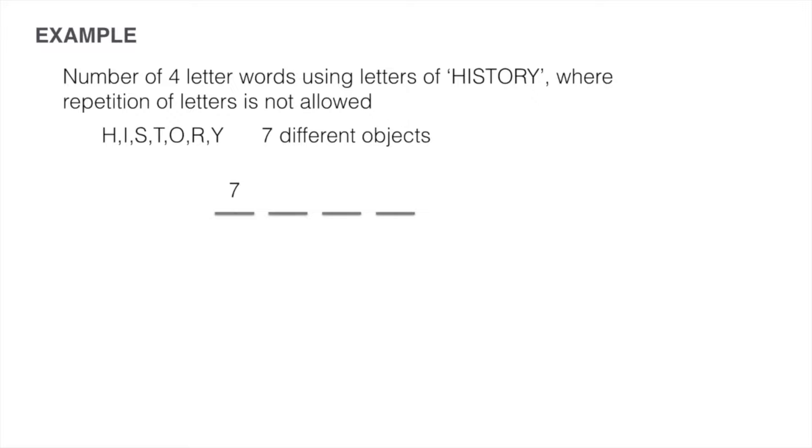I have seven options for the first position, six options for the second, five for the third and four for the fourth. Hence the total number of permutations I get is 7 multiplied by 6 multiplied by 5 multiplied by 4 which equals 840 permutations.